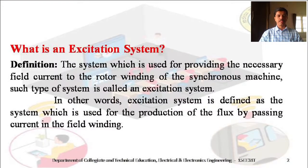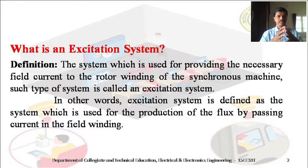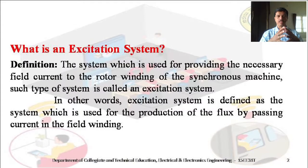First, we should understand what is meant by an excitation system. We are all familiar with excitation. Excitation means giving current to the field winding in order to create a magnetic property or magnetic flux. In the case of an alternator, the excitation system is nothing but the system used for providing the necessary field current to the rotor winding of the synchronous machine. The required field current is given to the rotor winding with the help of such a system.